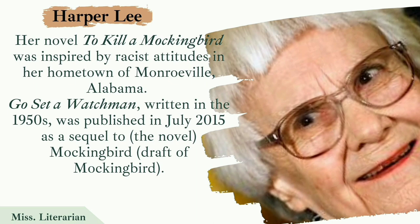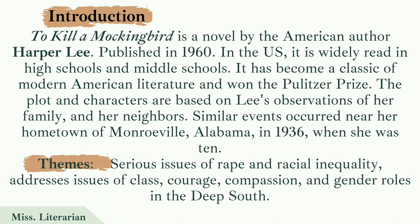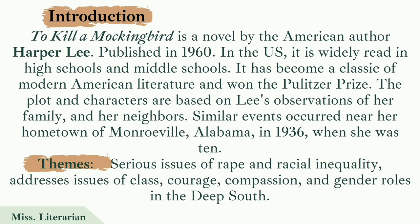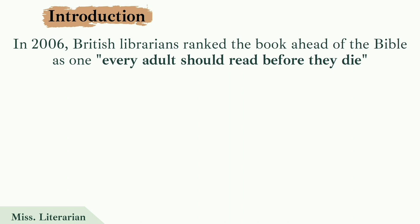This novel instantly became successful when it was published in 1960. The book was highly read in high schools and middle schools. We also come across issues of rape and racial inequality, as well as the theme of destruction of innocence and racial injustice. Many critics and scholars have addressed themes focusing on class, courage, compassion, and gender roles in the deep south. In 2006, British librarians ranked it ahead of the Bible, commenting that every adult should read it before they die.